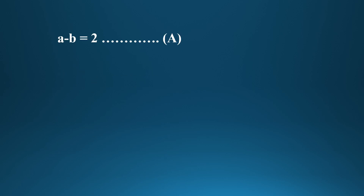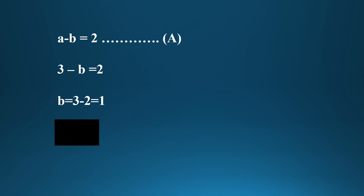Substituting a = 3 into x − y = 2: 3 − b = 2, so −b = 2 − 3 = −1, therefore b = 1. So a = 3 and b = 1.